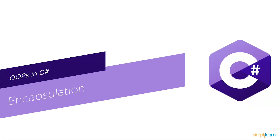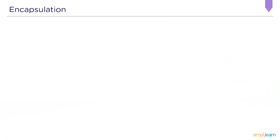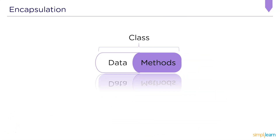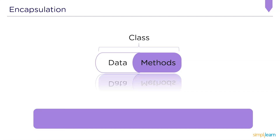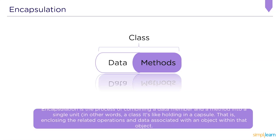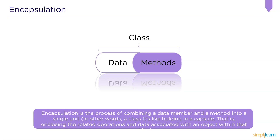First, let's get started with encapsulation in C#. Encapsulation is the process of combining a data member and a method into one single unit or class. It is the process of enclosing something in a capsule — that is, having an object's related operations and data within that particular object.